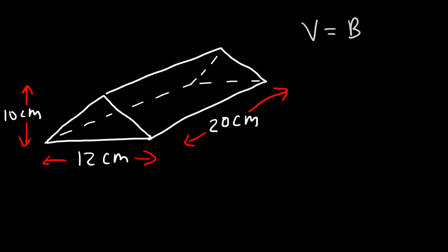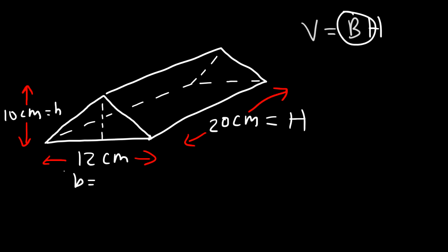Let me use capital H instead of lowercase h. So 20 centimeters is the height of the prism, 12 is the base of the triangle, and 10 centimeters is the height of the triangle. Capital B represents the area of the base, basically the area of this triangle. To calculate the area of the triangle it's 1 half base times height.